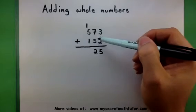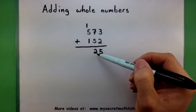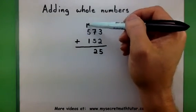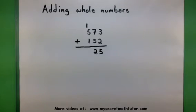So when I add 7 and 5, I get 12. So I put the 2 down here, but the 1 from the 12, it's going to get carried over into the next place value.